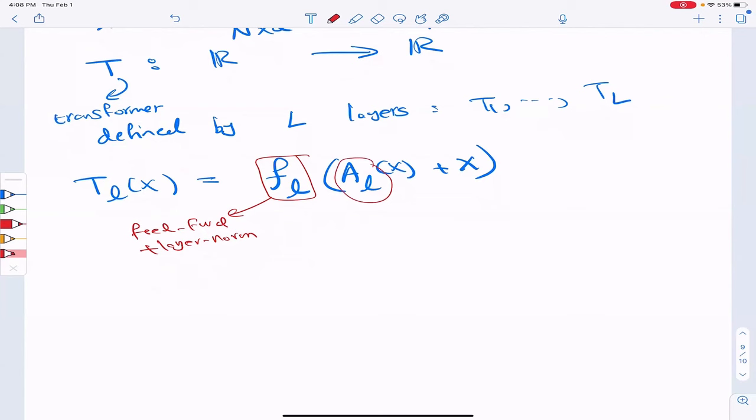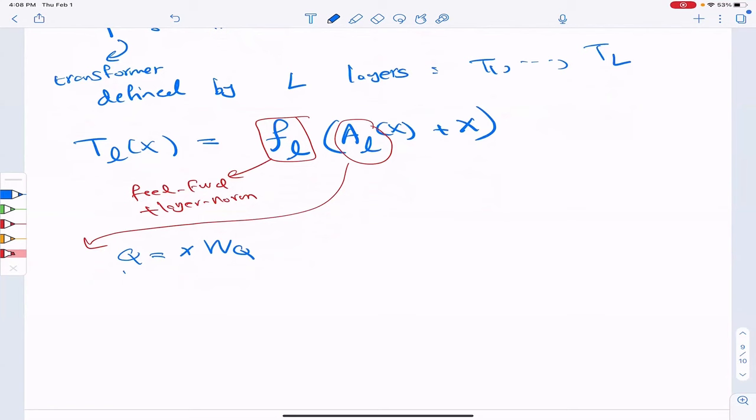So what is the formula for the attention? So we first generate three matrices. The query matrix by multiplying X to matrix WQ. The key matrix by multiplying X with WK. And V matrix by multiplying X with WV.